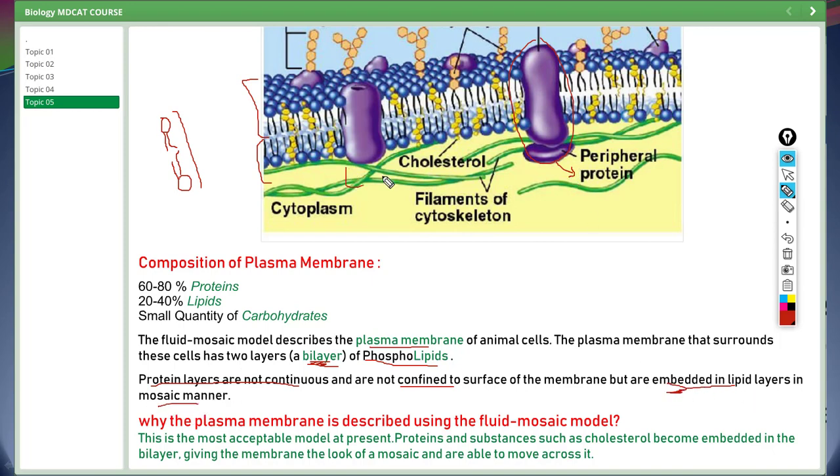Now the question arises why the plasma membrane is described using the fluid mosaic model. This is the most acceptable model at present. Proteins and substances such as cholesterol become embedded in the bilayer giving the membrane the look of mosaic and able to move across it.